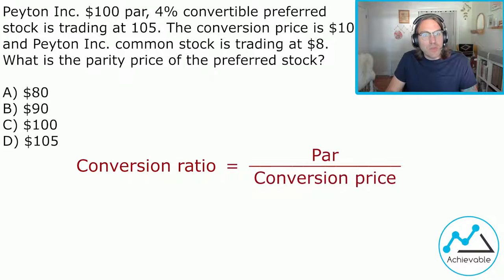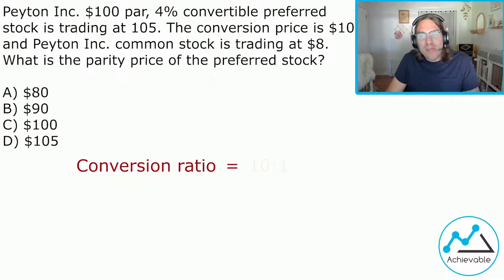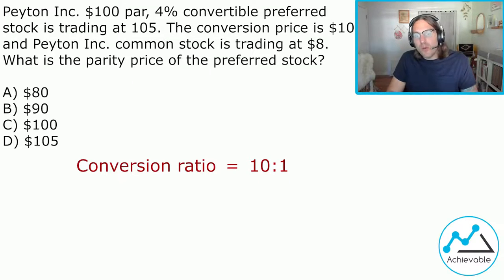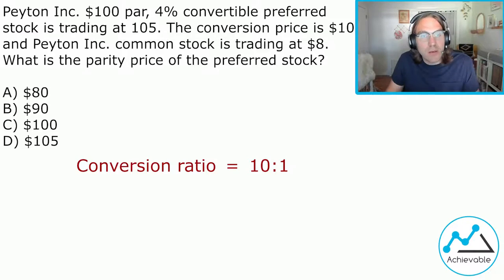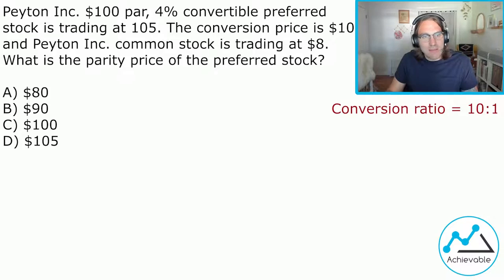The conversion ratio is the most important part of any math-based convertible question, and it was not provided to us, but the conversion price was. The conversion ratio equals the PAR value divided by the conversion price. Taking the $100 PAR value divided by the conversion price of $10, we get a conversion ratio of 10, or 10 to 1. That means if we decide to convert our one share of preferred stock, we will get 10 shares of common stock. My biggest advice: identify the conversion ratio as soon as you can. Sometimes it'll be provided; if not, take the PAR value divided by the conversion price.